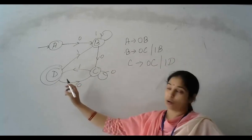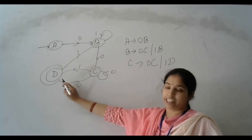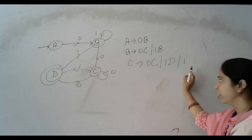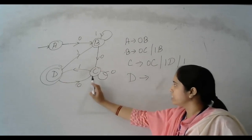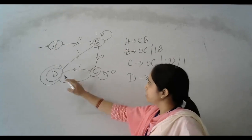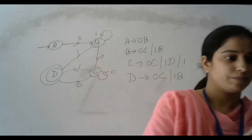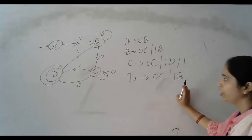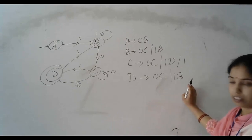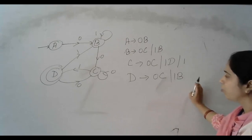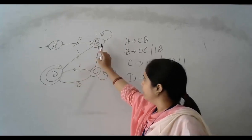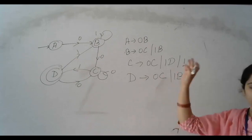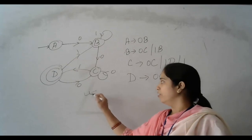And D is also a final state, so we write D tends to 1. We have to write this here. D also has a transition: D tends to 0C. And since D is a final state, we write D tends to 1 as well. This is our regular grammar for the given finite automata.